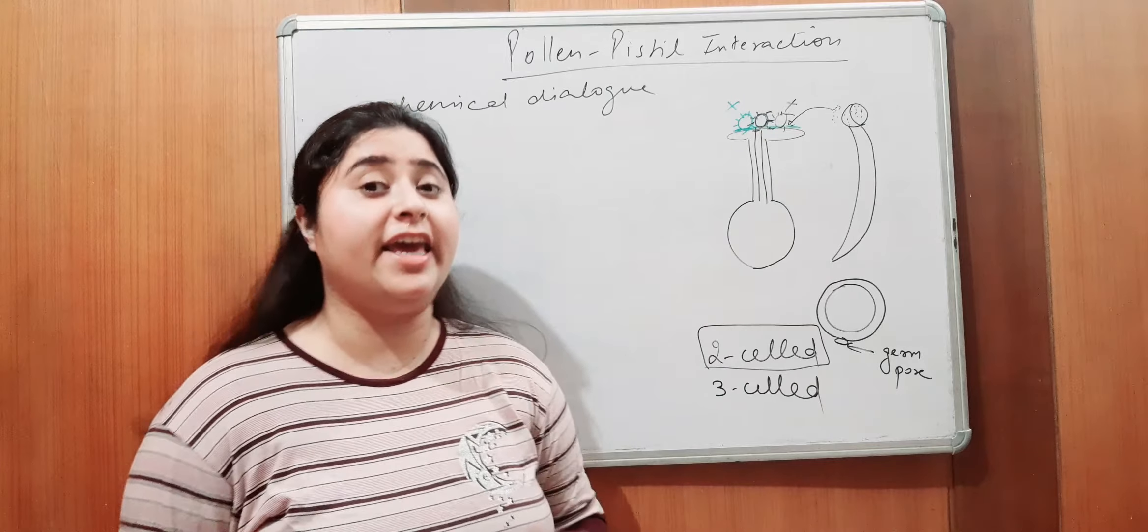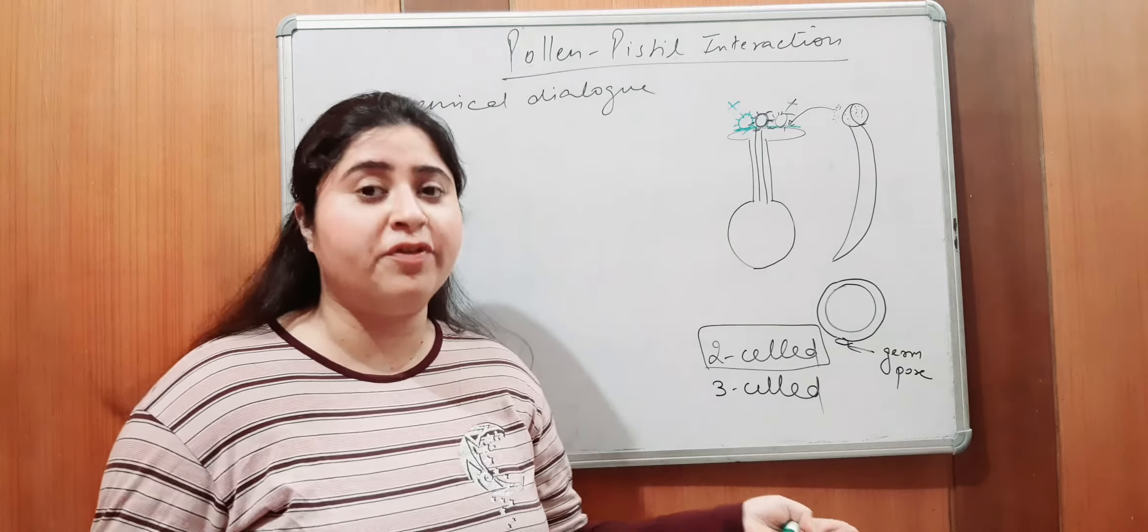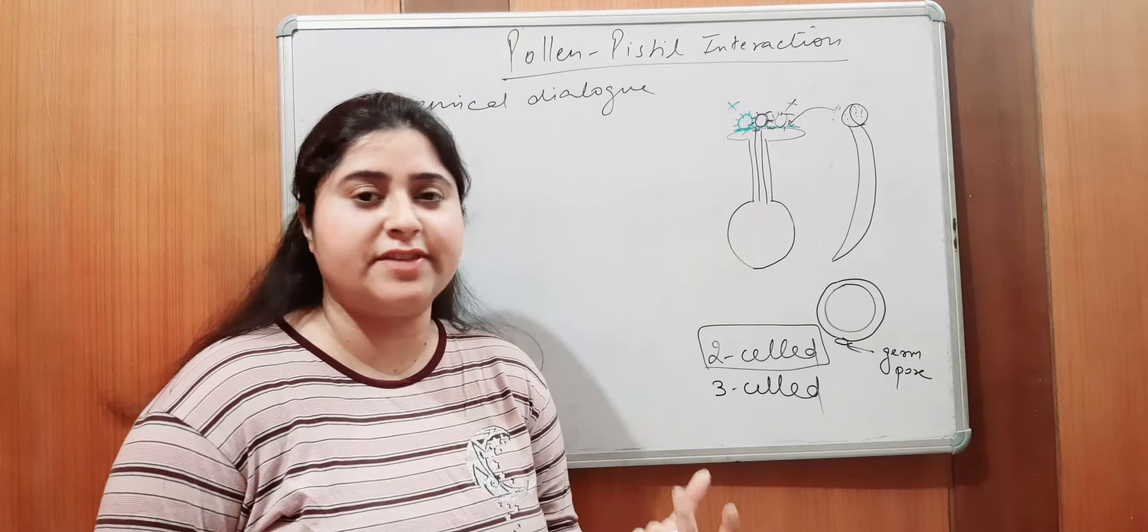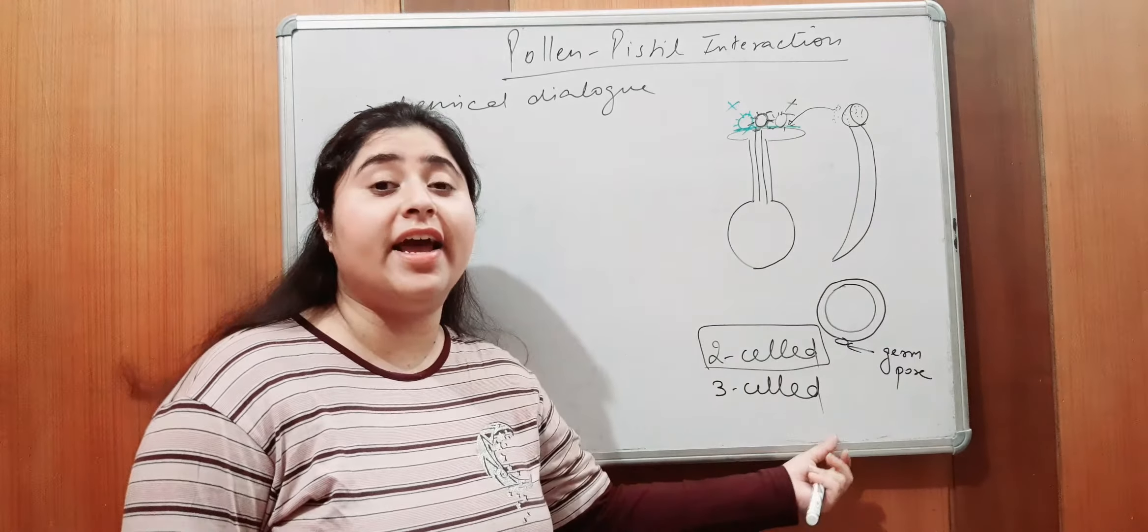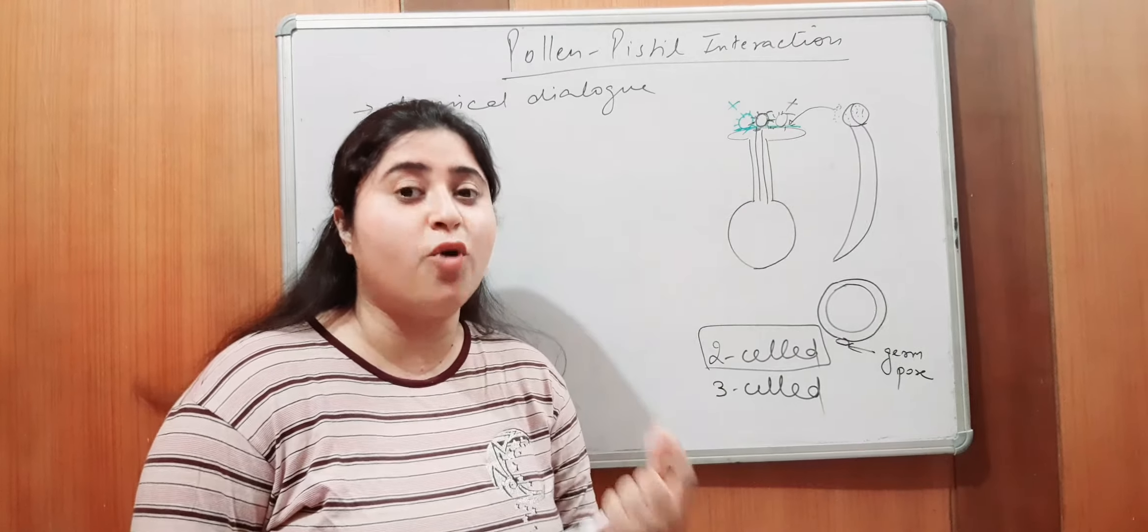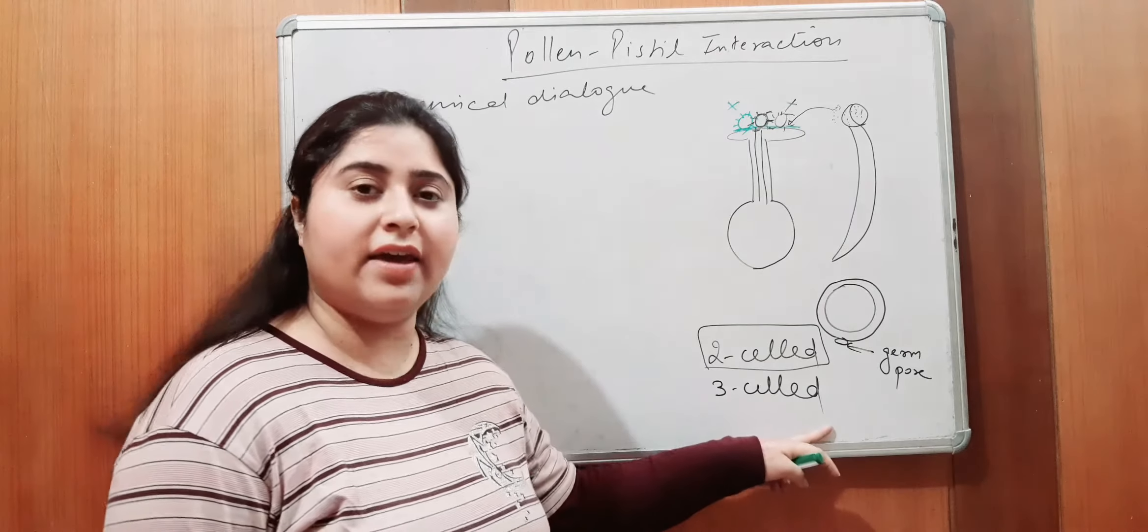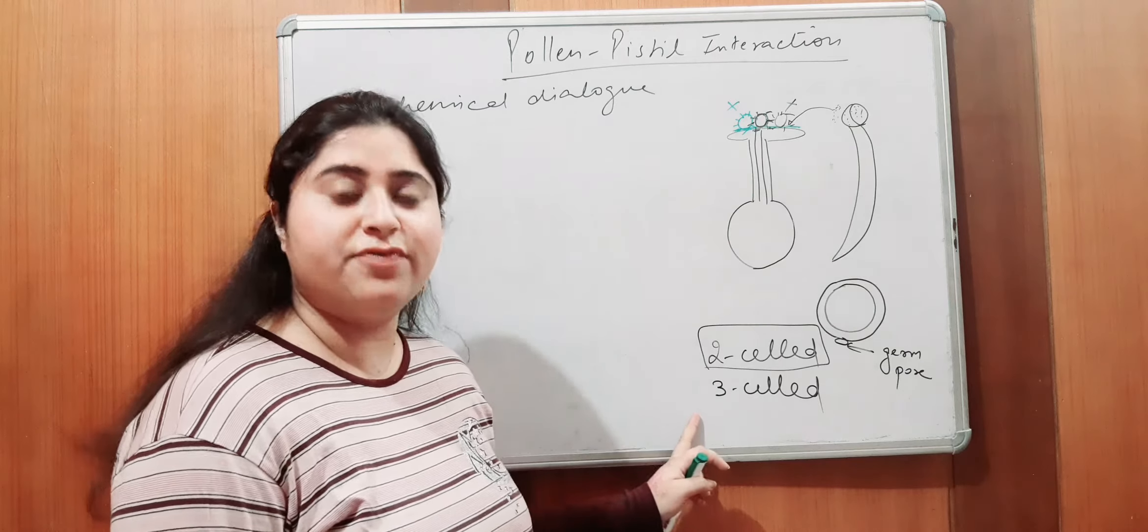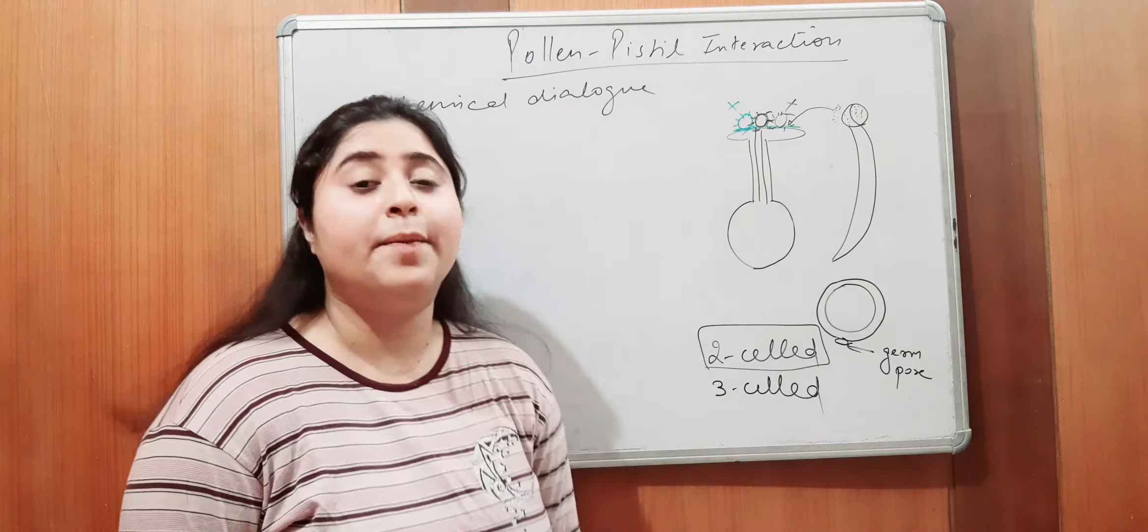Agar toh two-celled hai, toh us mein ek vegetative cell hai, ek generative cell hai. Vegetative cell is the larger one which provides nutrition and the generative cell is the smaller one. Right? Uske baat agar three-celled hai, toh that generative cell, smaller one, it will further divide and form two generative cell. So, is mein teen cell hai. Ek tube cell, that is vegetative cell and two are the generative cell.